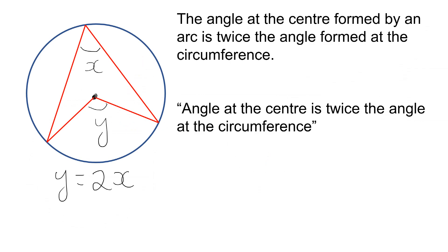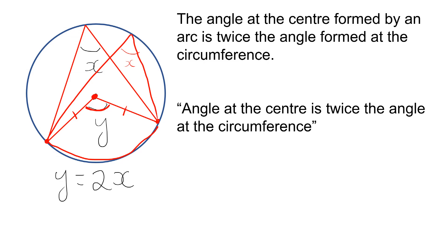The next circle theorem is that the angle at the center is twice the angle at the circumference. Specifically, if we have an arc of a circle formed by two radii, the angle formed at the center is going to be double the angle that you would form if you drew a triangle from either side of the arc to any point on the circumference. The angle at the center is double the angle at the circumference.